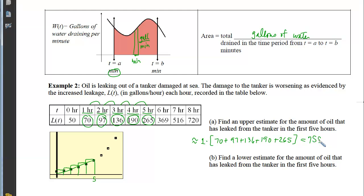Now let's think about what the units will be. We are multiplying L(t) outputs, which are measured in gallons per hour, by widths that are measured in hours. So if I multiply those two together, I end up with just gallons of oil that have leaked.